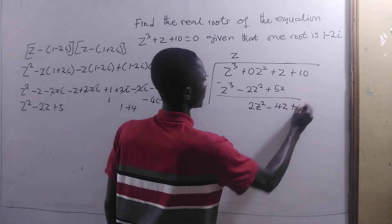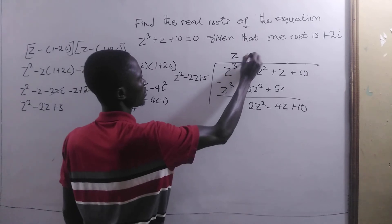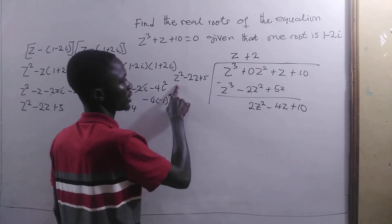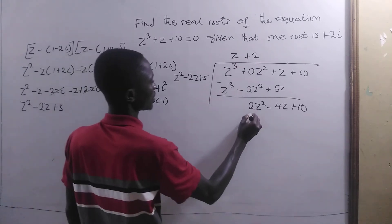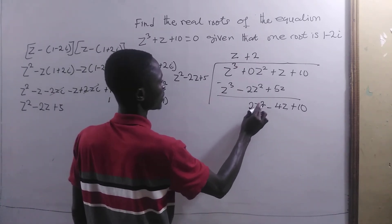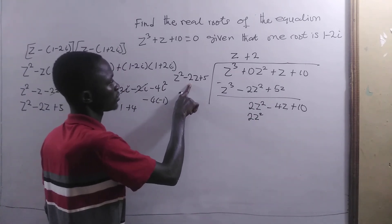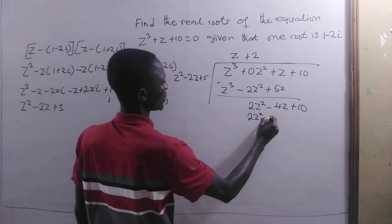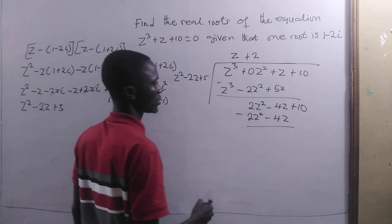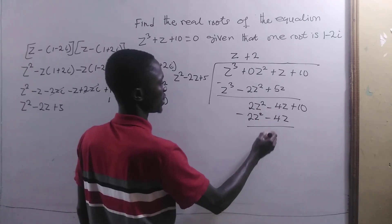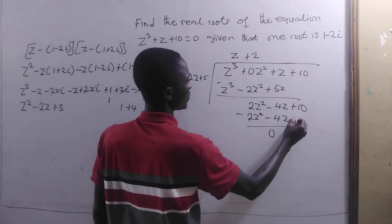Then we bring down +10. Then z² will go into this +2. z² times 2 gives us 2z². -2z times this will give us -4z. Now if we subtract, we are going to get zero. Then 5 times 2 will give us 10.